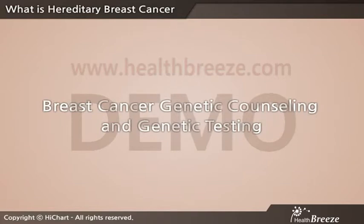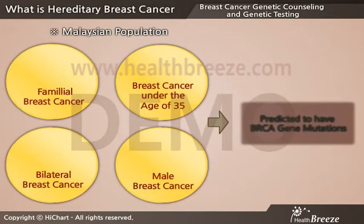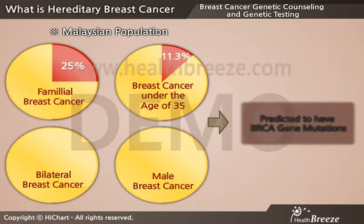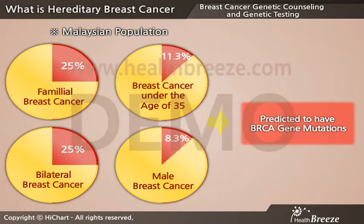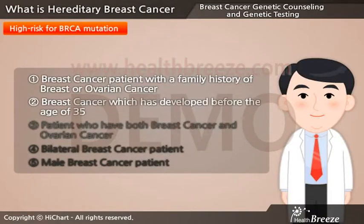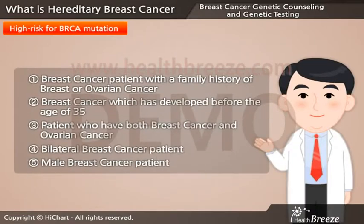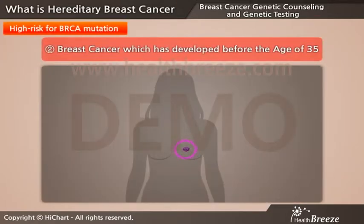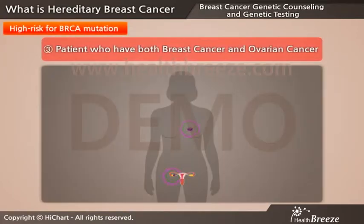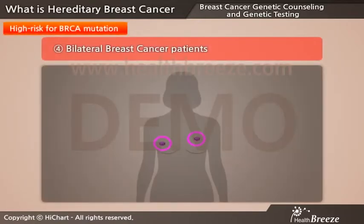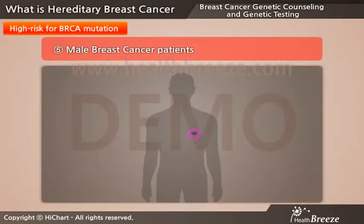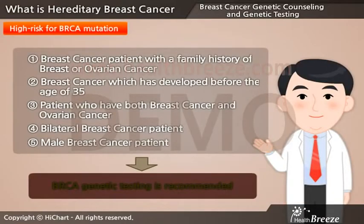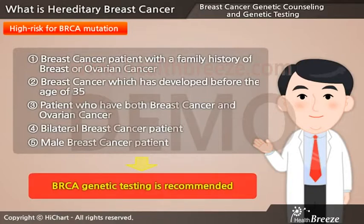Breast cancer genetic counseling and genetic testing. According to a study of the Malaysian population, 25% of familial breast cancer patients, 11.3% of breast cancer which occurred in women less than 35 years old, 25% of bilateral breast cancer, and 8.3% of male breast cancer are predicted to have BRCA gene mutations. Some groups that are at high risk for BRCA mutation include: breast cancer patients with a family history of breast or ovarian cancer, breast cancer which has developed before the age of 35, patients who have both breast cancer and ovarian cancer, bilateral breast cancer patients, and male breast cancer patients. People who belong to more than one of these groups are at high risk and genetic testing is recommended.